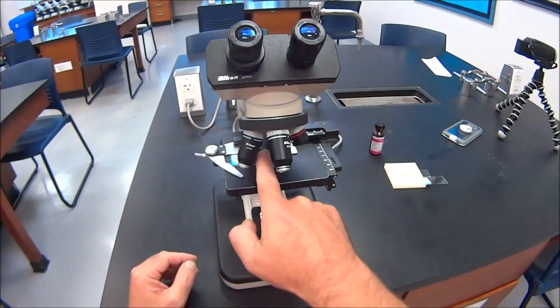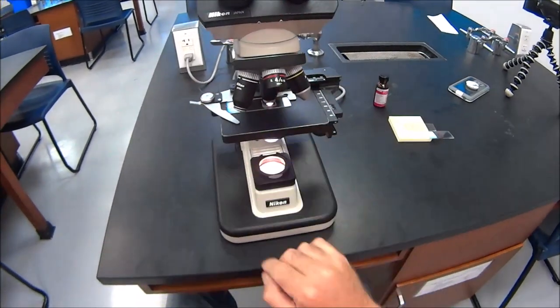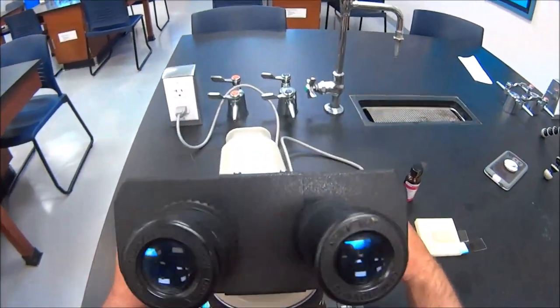Now that we've got it in focus at 10, we go up to the next lens, which is 40. So we're going to get that in focus. At 40x objective lens, you're starting to see the bacterial cells as little red hair-like lines.